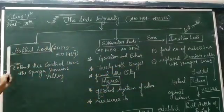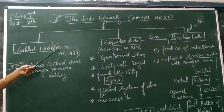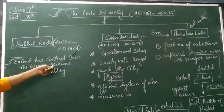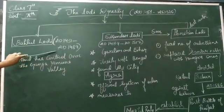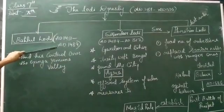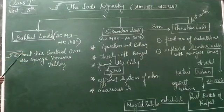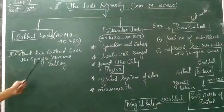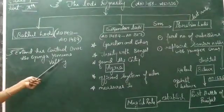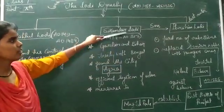Firstly, we are going to talk about Bahlul Lodi. His time period was from AD 1451 to AD 1489. He consolidated his power by controlling rebellions and crushing invasions from the Mongols. He extended his control over the Yamuna Doab region, and further extended to Gwalior and Bihar under the rule of Sikandar Lodi.